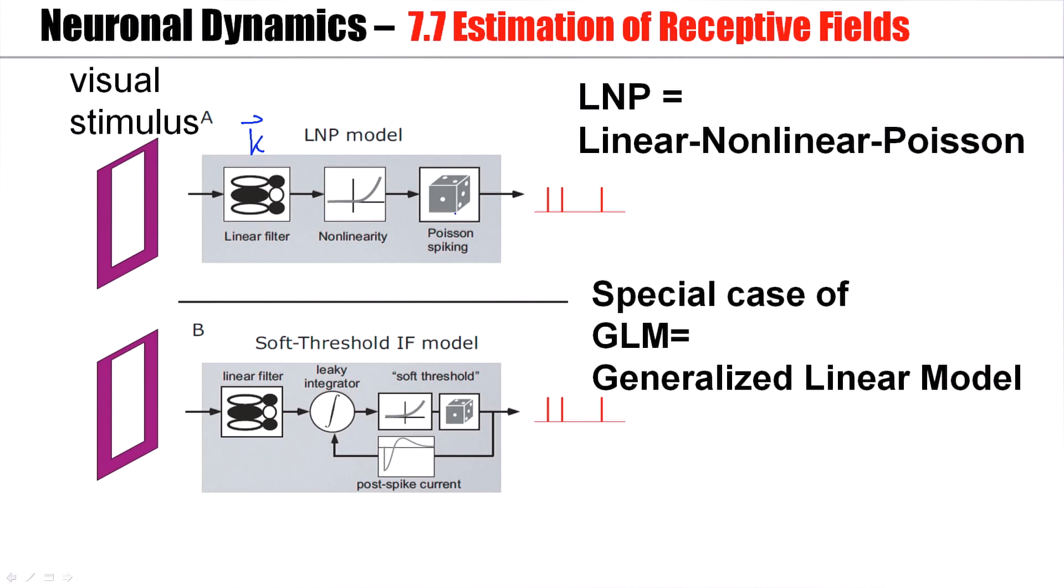Now this is a special case of the model we had before. The model before had, in addition, this post-spike current, the spike after current. The linear filter can be combined with a temporal filter, here modeled as a leaky integrator. So we are back here in the framework of generalized linear models, or spike response models with escape noise.